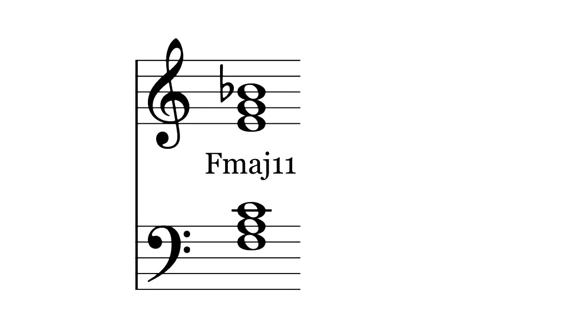Take this major 11th chord. It's a bit hard to use because of the unpleasant minor 9th between the 3rd and 11th. But 19-tet semitones are wider than 12-tet's, which softens that dissonance.